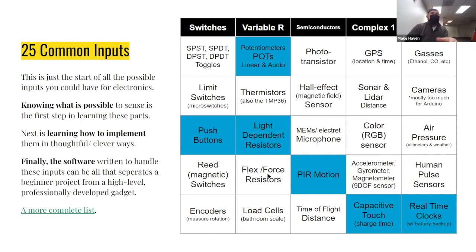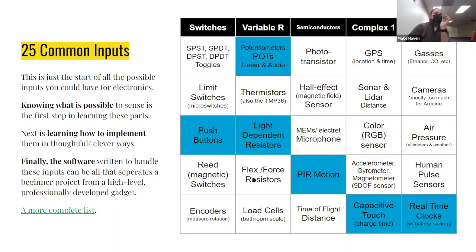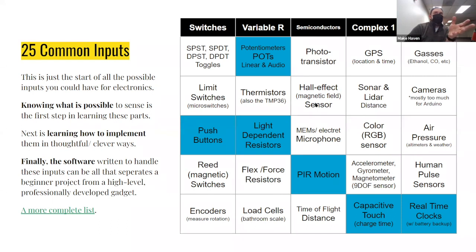Flex sensors have been built into VR gloves to measure how much your fingers move and feed that into a game. Load cells are everyone's favorite and least favorite simultaneously — that's the bathroom scale. A load cell can take on weight and the amount it flexes can be turned into a weight measurement. Semiconductors include photo transistors for light, hall effect sensors for magnetic fields, and microphones.